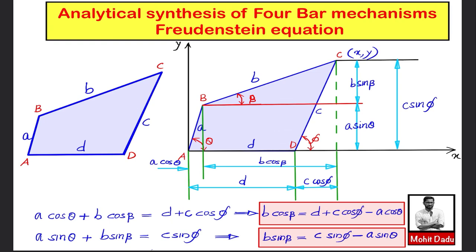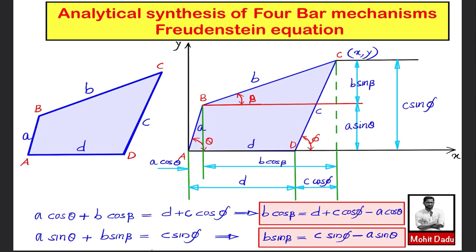Here on the left side you can see the four-bar mechanism A-B-C-D. The link lengths are a, b, c and d. I will be fixing a coordinate system with x and y axes. Point C has coordinates x and y. The y-coordinate is the distance from the x-axis, and the x-coordinate is the distance from the y-axis.